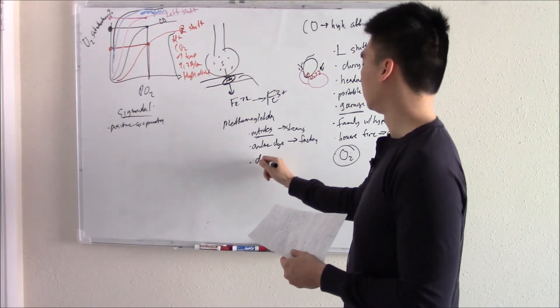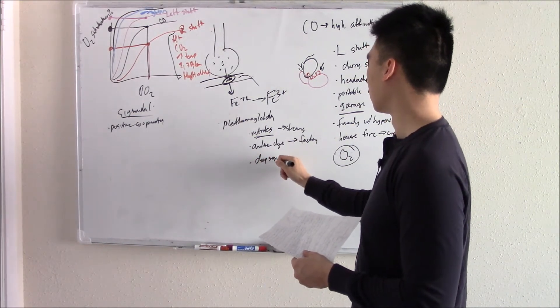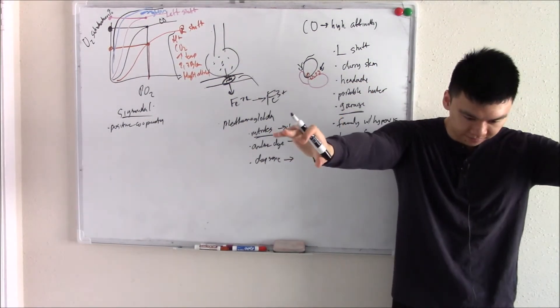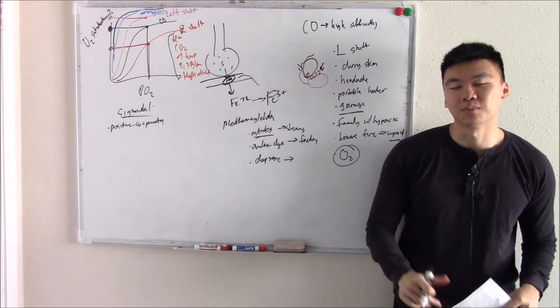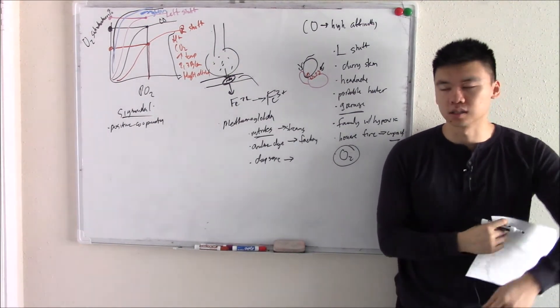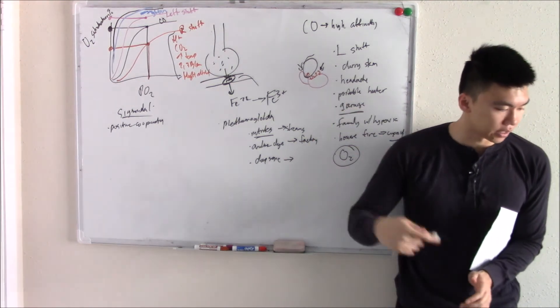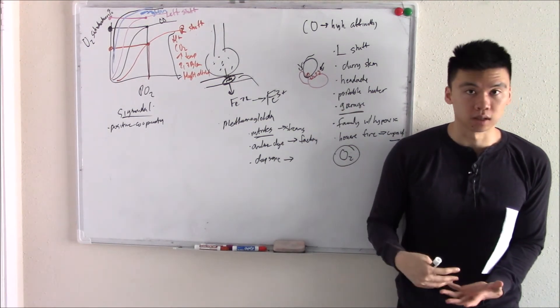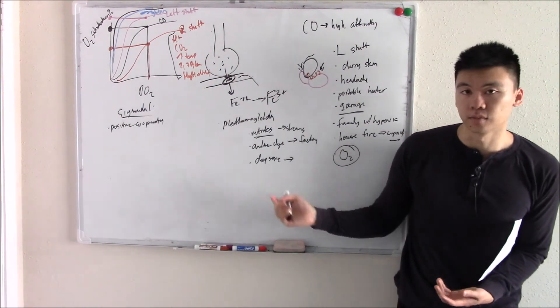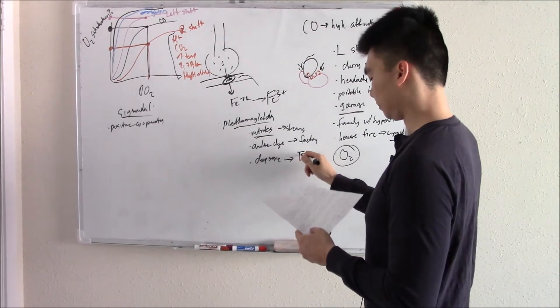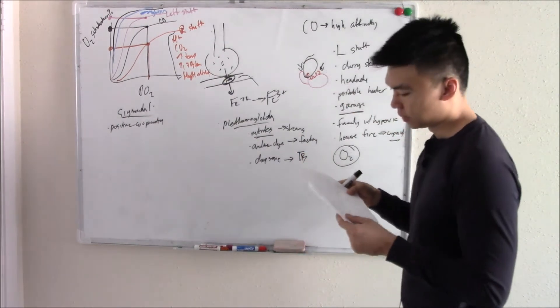Dapsone. Dapsone is an anti-tuberculosis drug. So a patient has all the signs of TB. Pause the video, tell me everything you know about TB. Especially if micro is your weak point. The patient comes in with everything, all these signs of TB, and you give them a drug, and then suddenly they develop hypoxia. Think of Dapsone. Think of Methemoglobin.